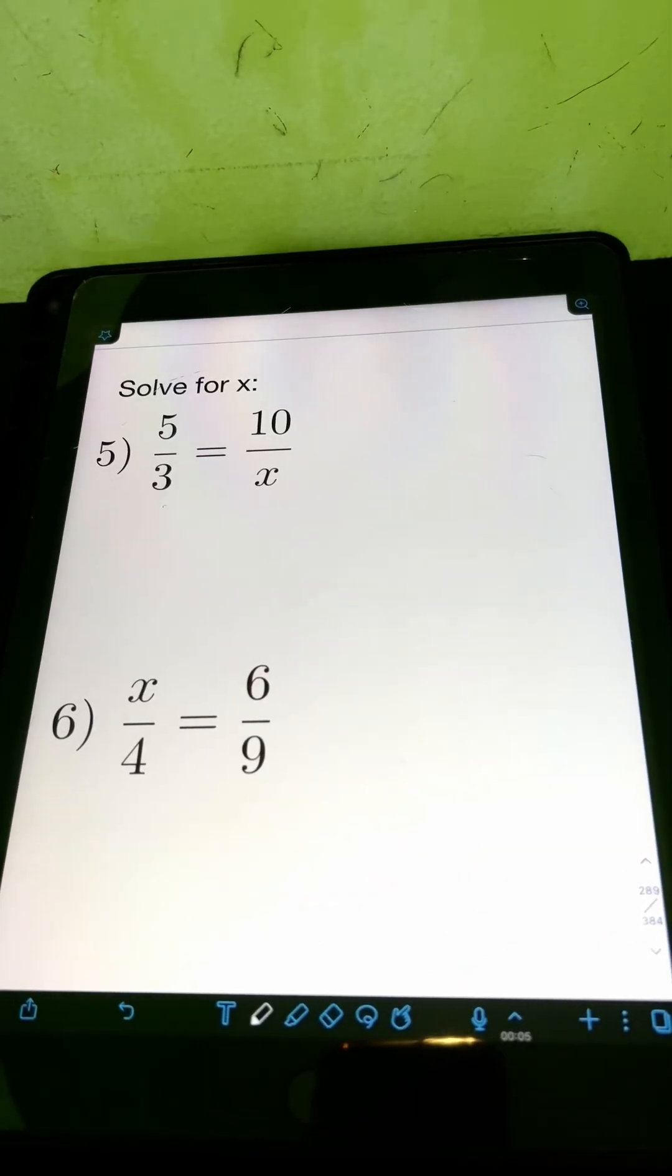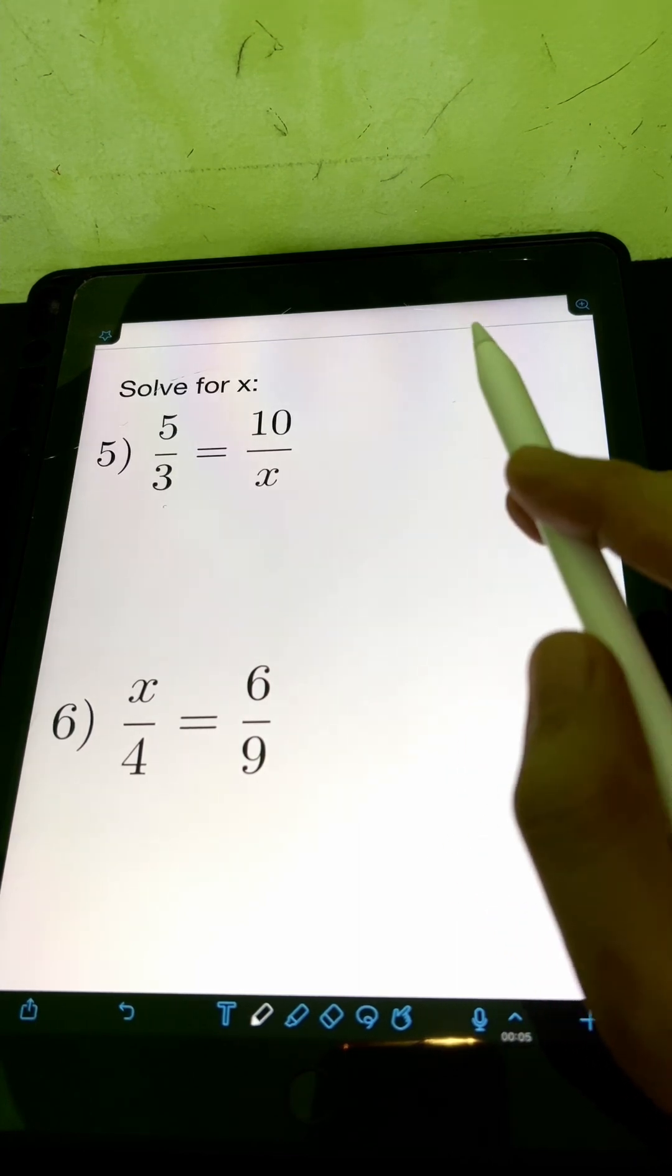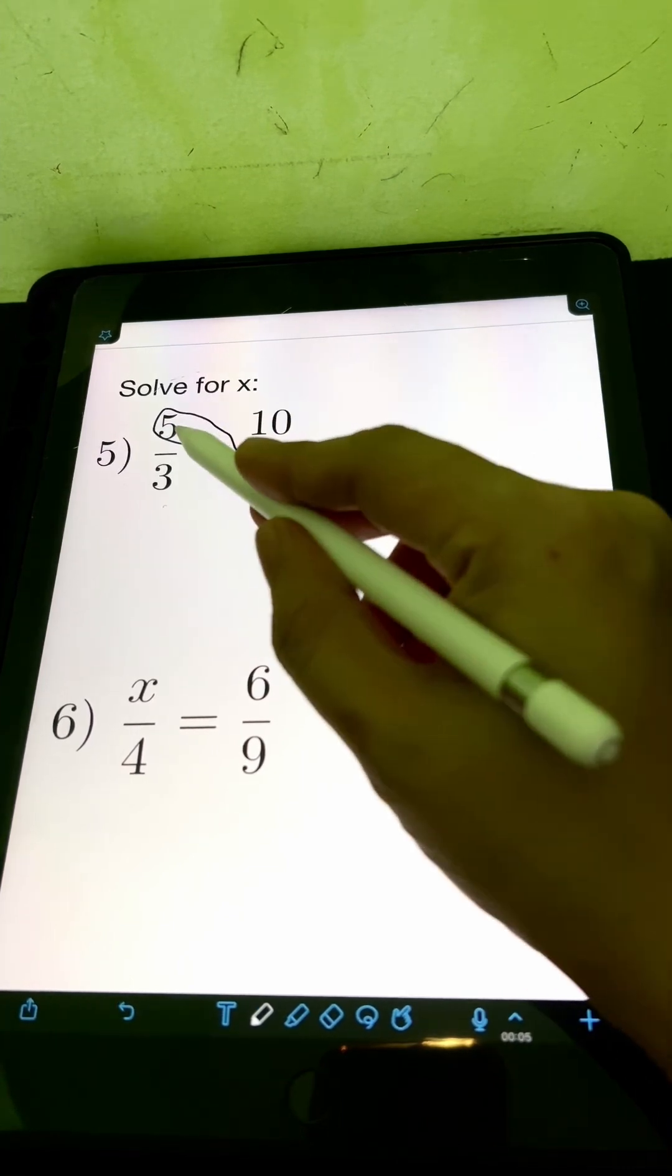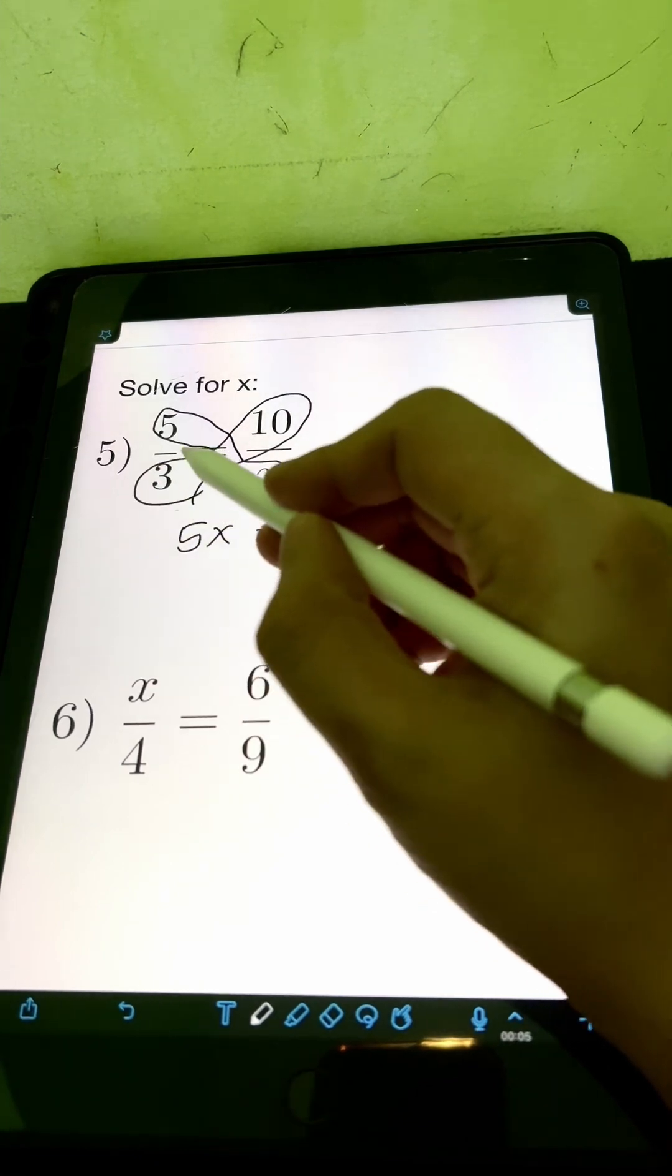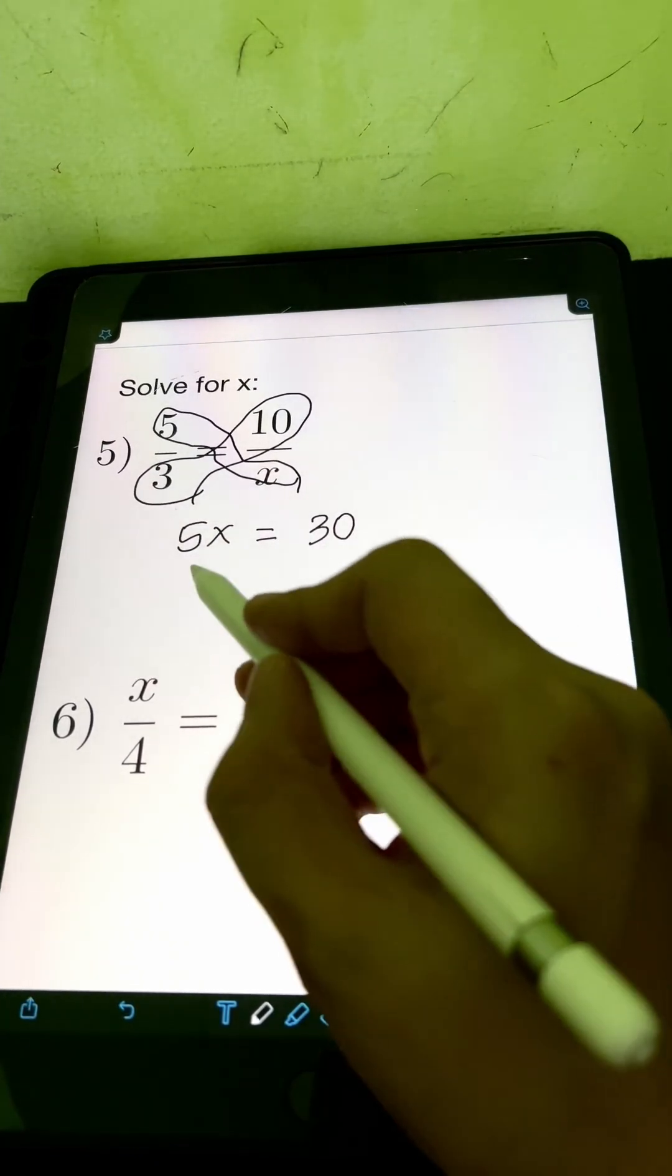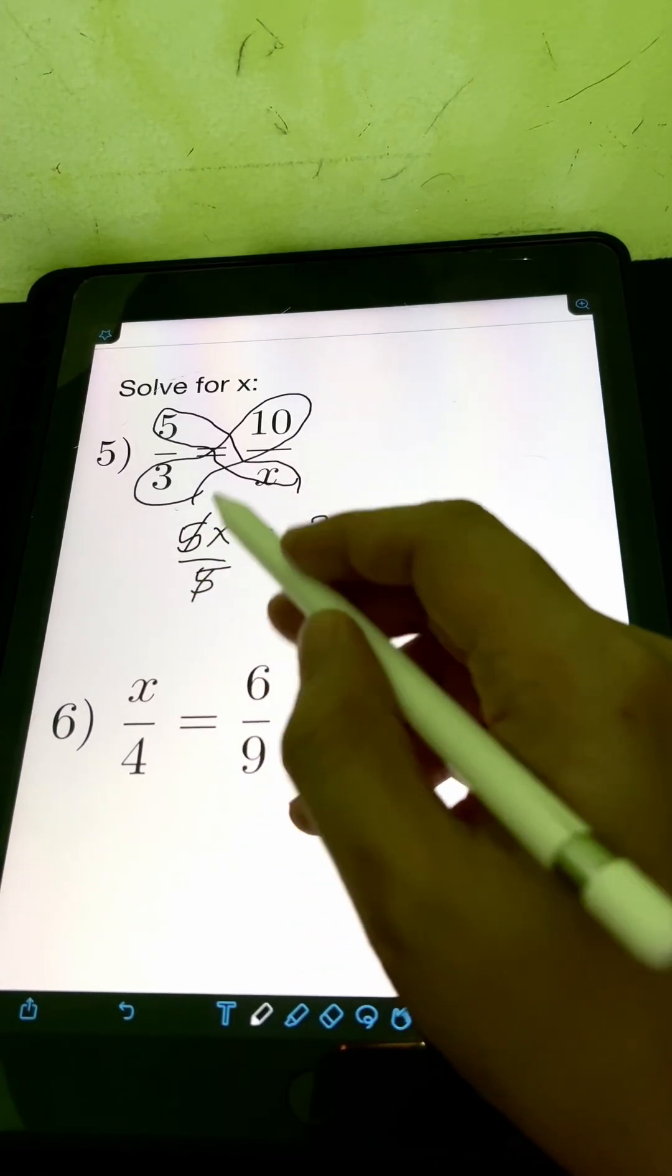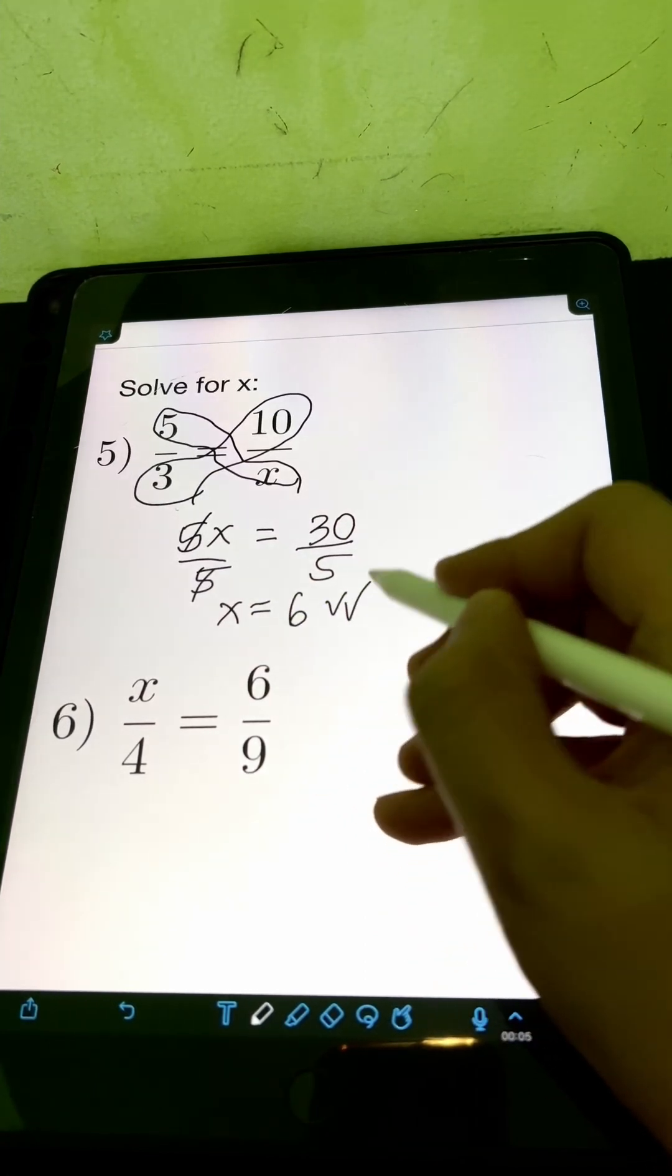Next for 5, we have 5 thirds is equal to 10 over x. So this time, if the ratio and proportion are written in terms of fractions, this time we can apply the cross multiplication. So we can multiply 5 times x, so 5x, equate it to the product of 3 times 10 or 30. And then, we can solve this equation for x by dividing both sides by 5. Cancelling out 5, x is equal to 30 divided by 5 or 6.